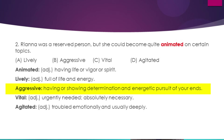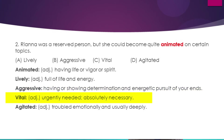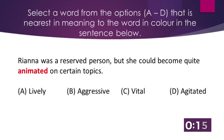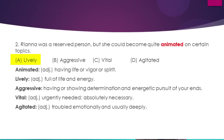Option B — aggressive — means having or showing determination and energetic pursuit of your ends. Option C — vital — is an adjective which means urgently needed, absolutely necessary. Option D — agitated — means troubled emotionally and usually deep. The answer is lively, option A, because animated means having life or vigor or spirit, and lively means full of energy, full of life.